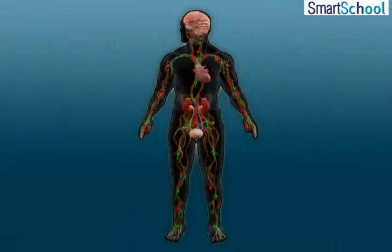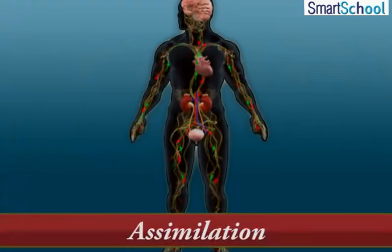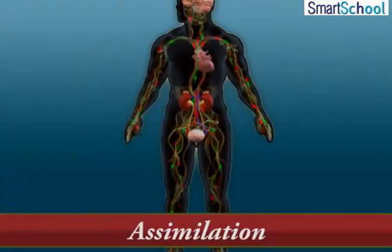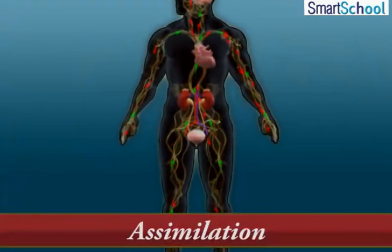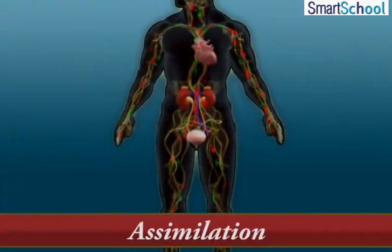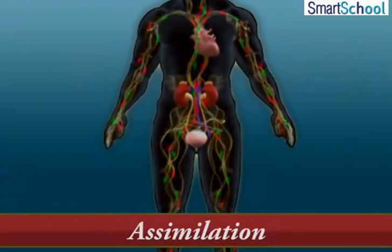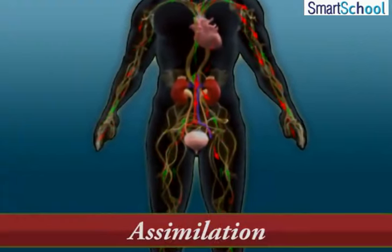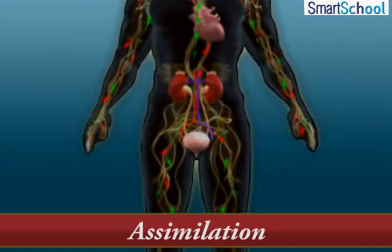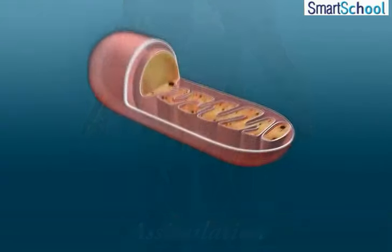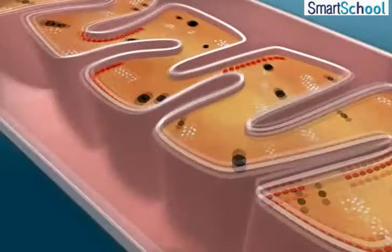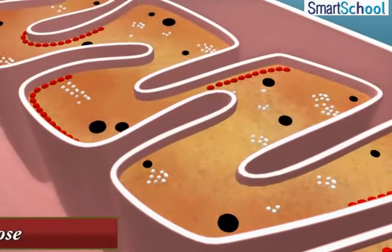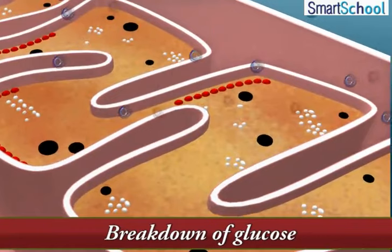The absorbed digested food is then transported via the blood vessels to different organs of the body, where it is used to build complex substances required by the body, such as proteins. This process is called assimilation.